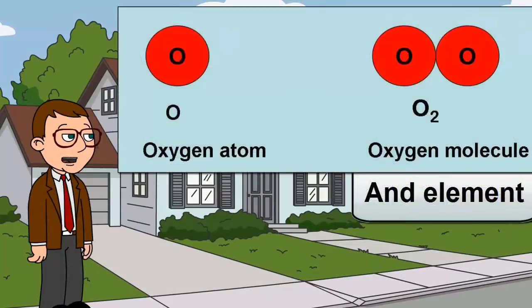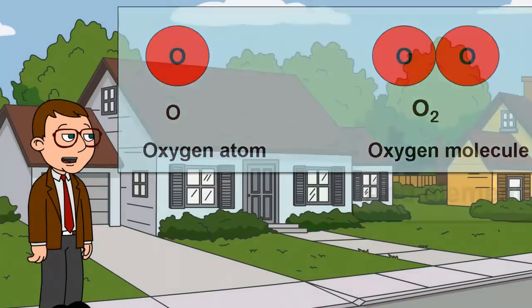If the two or more atoms are the same, it is called an element. Oxygen is an atom, but when two oxygen atoms are joined together, a molecule of an element is formed. It's a molecule because there are two or more atoms, and it's an element because they are the same.